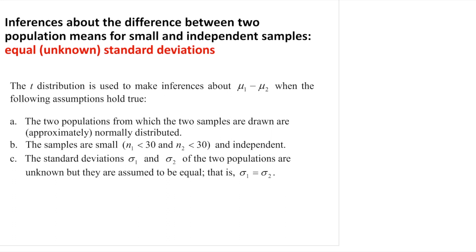Hi class, today we're going to discuss estimation and hypothesis testing about the difference between two population means for small samples with equal and unknown standard deviations. In this case, we would be using the T distribution when we have two groups of samples drawn from two normally distributed populations.